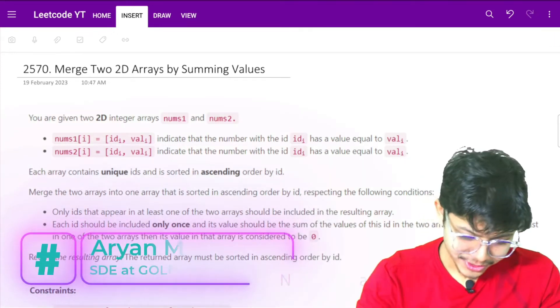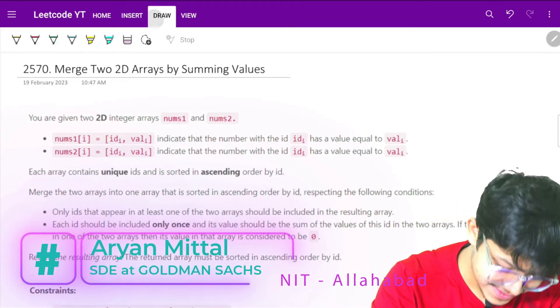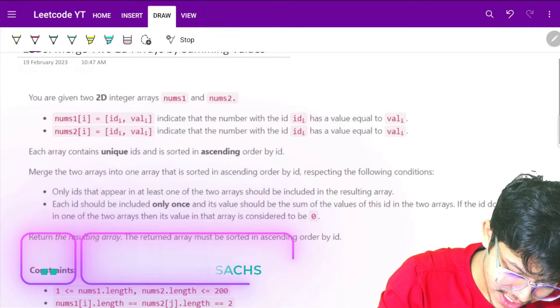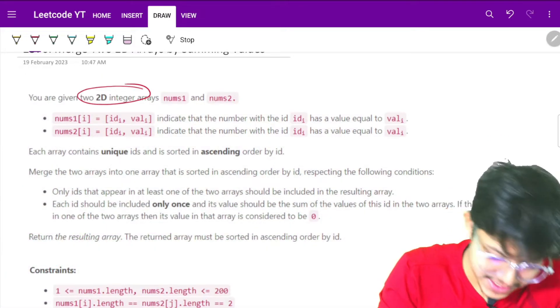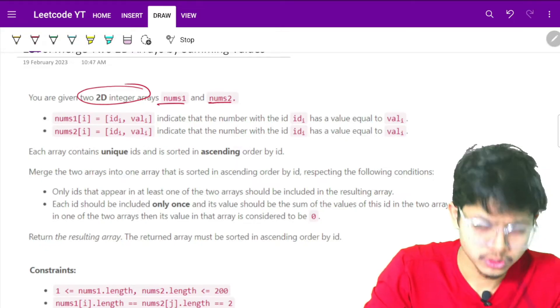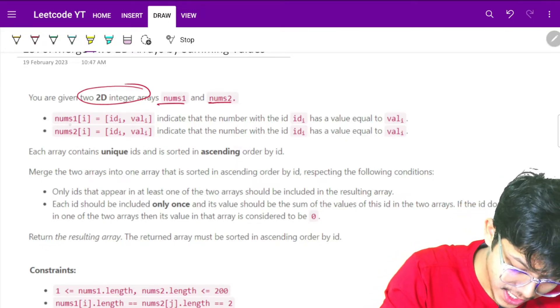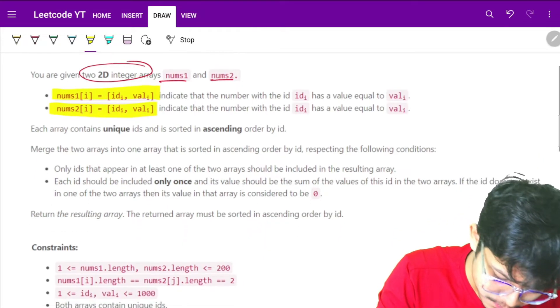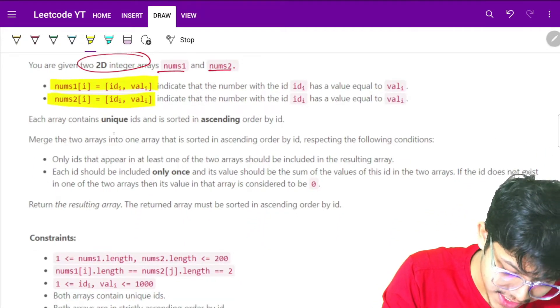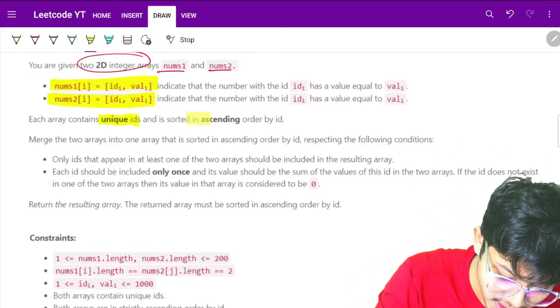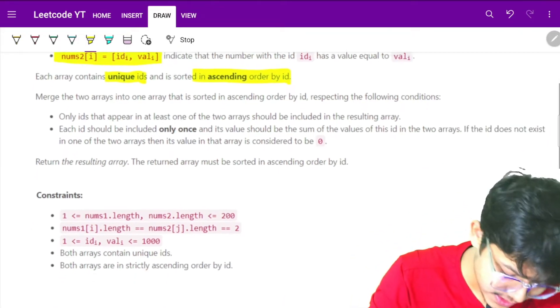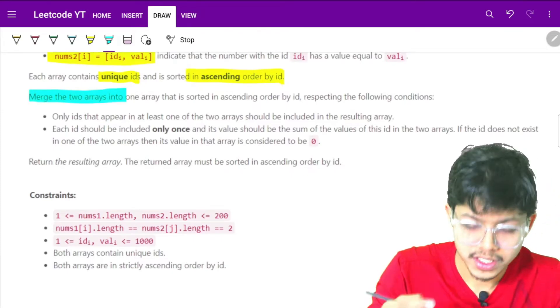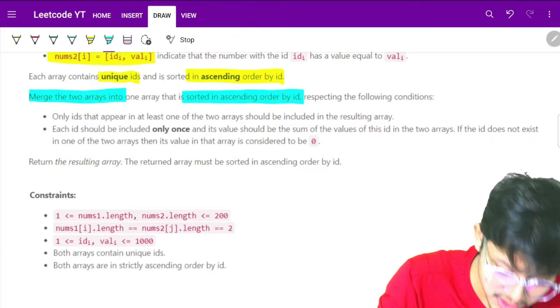Hello guys, in this video we'll see a question where we are given two 2D integer arrays, nums1 and nums2. Each array has an ID and a value. Each array contains unique IDs that are in ascending order by the ID. Now we have to merge these two arrays into one sorted ascending order array by ID.